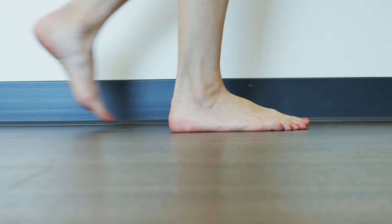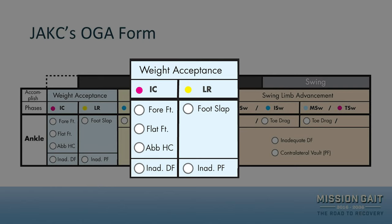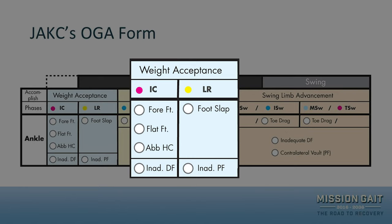At the ankle during initial contact, there are three main ways contact can occur. First is forefoot contact, where the toes are the first thing to make contact with the ground. Second is flat foot contact, where the toes and heel hit at the same exact time. Third is abbreviated heel contact, where the heel contacts first but is paired with inadequate dorsiflexion, so the toes are almost immediately on the ground after heel contact.